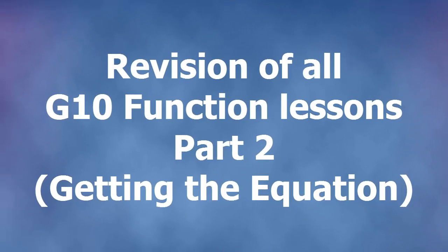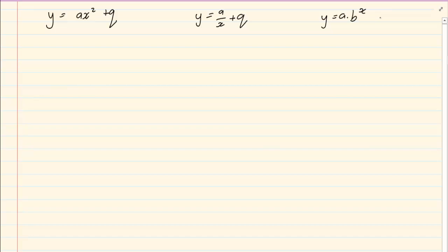In our summary, after you draw, you need to know how to get the equation of the graph. Now we know that our standard equation is y equals ax squared plus q, that's a parabola. y equals a over x plus q, hyperbola, and y equals a times b to the power of x plus q, exponential.